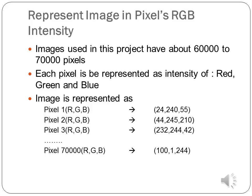Each image is made up of pixels. Images used in this project have about 60,000 to 70,000 pixels. Any color can be represented as a combination of three basic color components: red, green, and blue. Each pixel is represented as the intensity of red, green, and blue, with values between 0 to 255. For example, pixel 1 has an RGB value of 24, 40, 55, and pixel 2 has a value of 44, 45, 10.